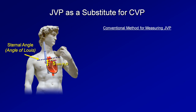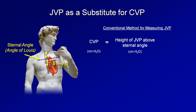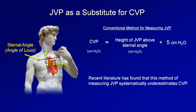In the conventional examination method, clinicians estimate CVP by observing the neck at whatever angle the maximum height of jugular venous pulsations is visible, then adding the vertical height of the JVP above the sternal angle to five. The upper limit of normal for JVP is most commonly cited at eight centimeters of water. However, recent literature has found that this method systematically underestimates CVP, and the degree of underestimation is more significant the higher the JVP is.